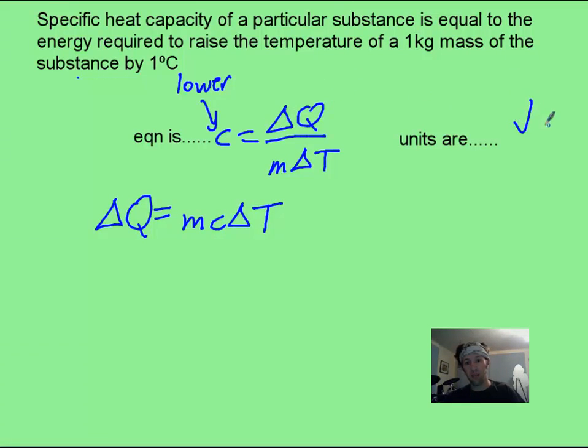The units, you can probably guess. If energy is on top, that's got to be joules. Mass is on bottom per kilogram per degree Celsius or it could be per kilogram per Kelvin.